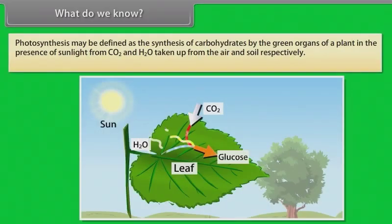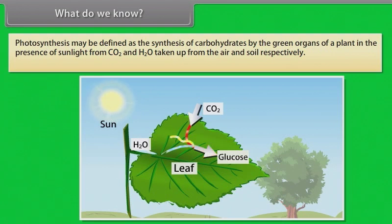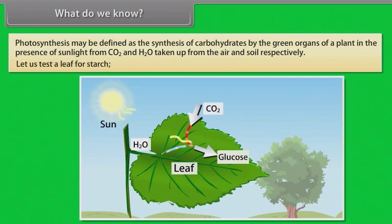Photosynthesis may be defined as the synthesis of carbohydrates by the green organs of a plant in the presence of sunlight, from carbon dioxide and water taken up from the air and soil respectively. Let us test a leaf for starch.